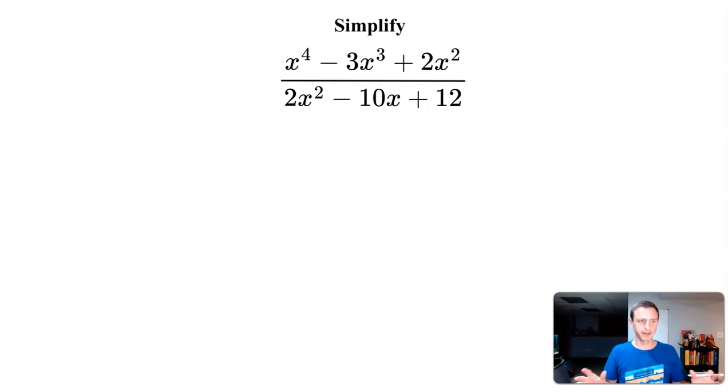In this video, I'm going to simplify this problem. We have x to the fourth minus 3x to the third plus 2x squared divided by 2x squared minus 10x plus 12. We're trying to simplify this rational expression.